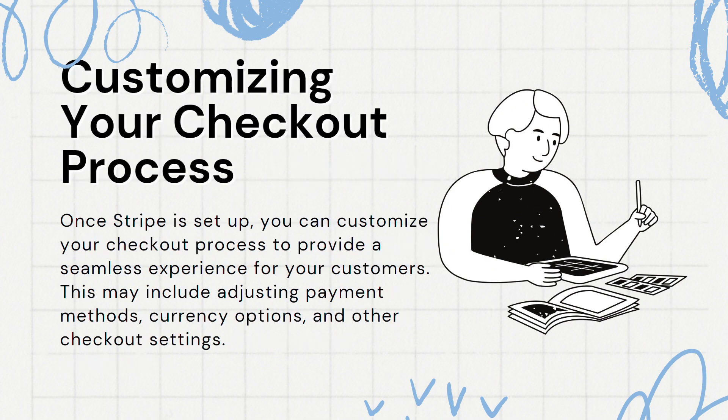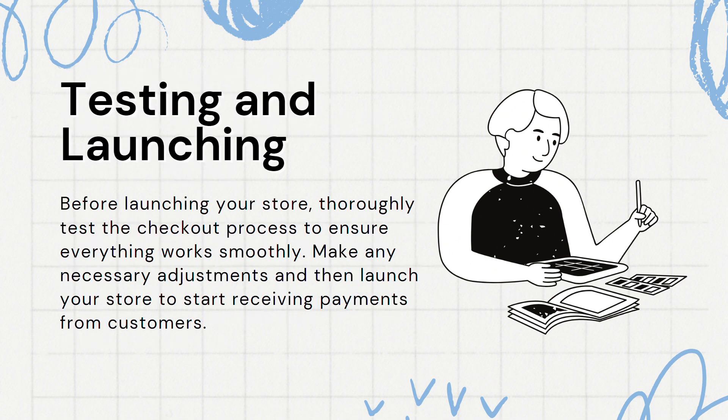Number 9: Customizing Your Checkout Process. Once Stripe is set up, you can customize your checkout process to provide a seamless experience for your customers. This may include adjusting payment methods, currency options, and other checkout settings. Number 10: Testing and Launching. Before launching your store, thoroughly test the checkout process to ensure everything works smoothly. Make any necessary adjustments and then launch your store to start receiving payments from customers.